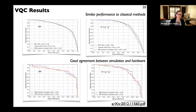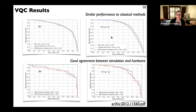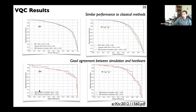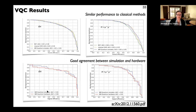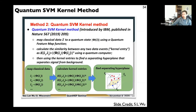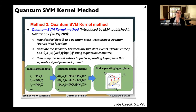VQC results show that for both ttH (left) and H→μμ (right), there is quite similar performance to classical methods — classical SVM and BDT — on the quantum simulator. The bottom plots compare IBM quantum simulator to IBM quantum hardware, showing actually quite good agreement between simulation and hardware.